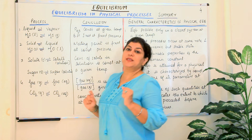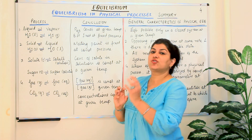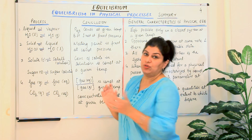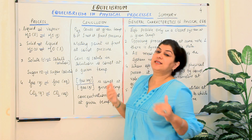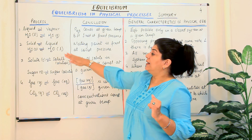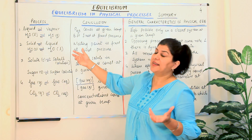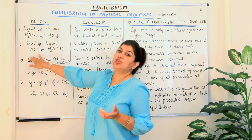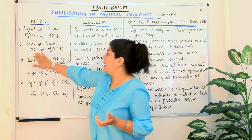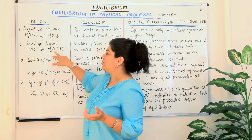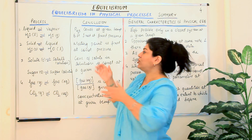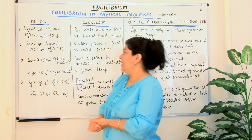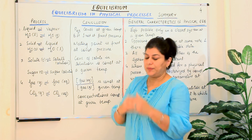In the second case, we studied a process where a solid was turning into a liquid or a liquid was turning back into a solid — a reversible process — which means melting or freezing is taking place. We took the example of water: ice turns into water, solid turning into liquid, and the reverse was liquid water turning back into ice, establishing an equilibrium.